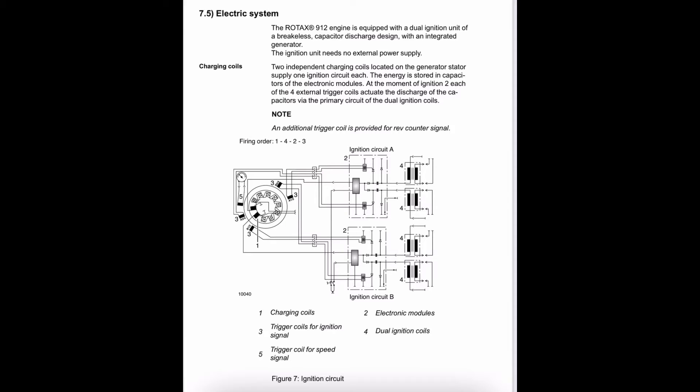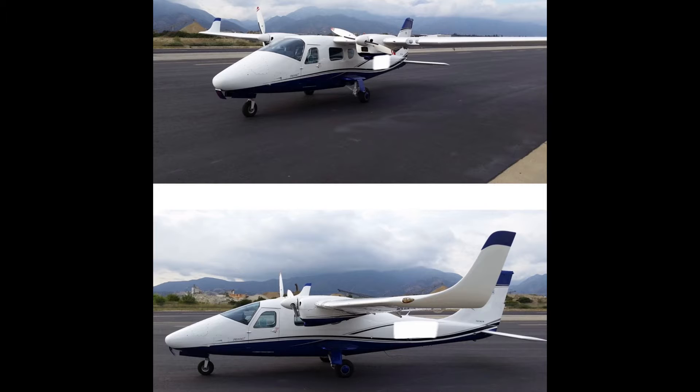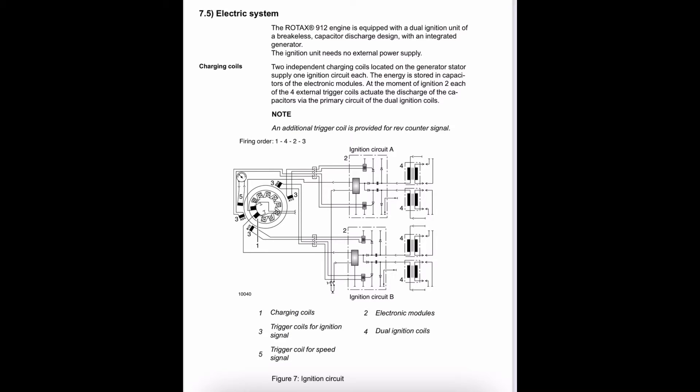This will be a basic description of the ignition system of a Rotax P2006T twin-engine aircraft. We're going to describe the function of the ignition because it's different than the magneto system you may be used to.